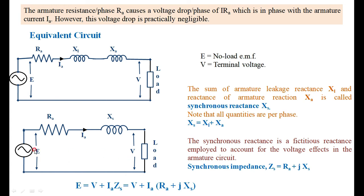The sum of Ra and Xs is the synchronous impedance of the synchronous generator. Establishing the relation between generated voltage E and terminal voltage V: E equals V plus the drop across the resistance plus the drop across the synchronous reactance. Therefore, E = V + Ia×Zs, where Zs = Ra + jXs. This is how we represent the alternator equivalent circuit.